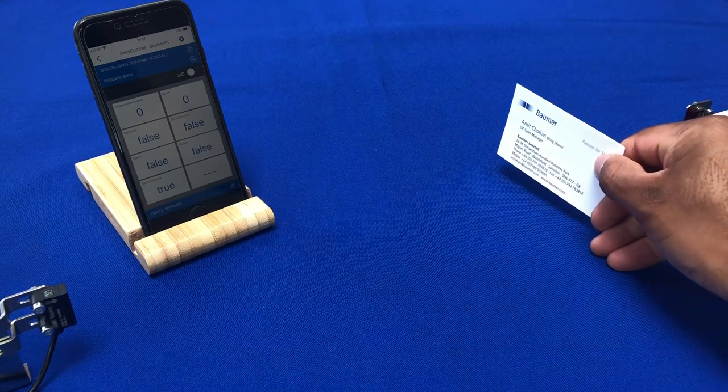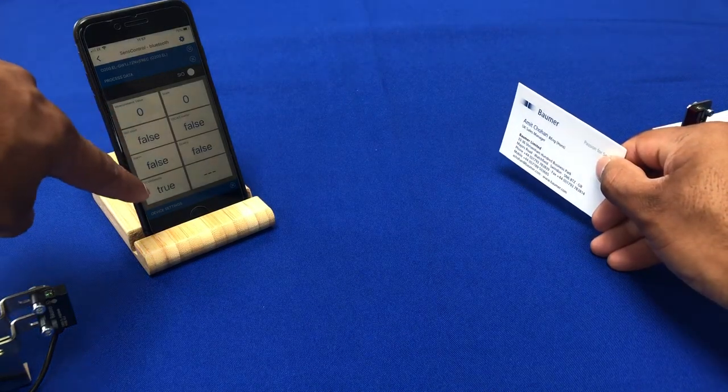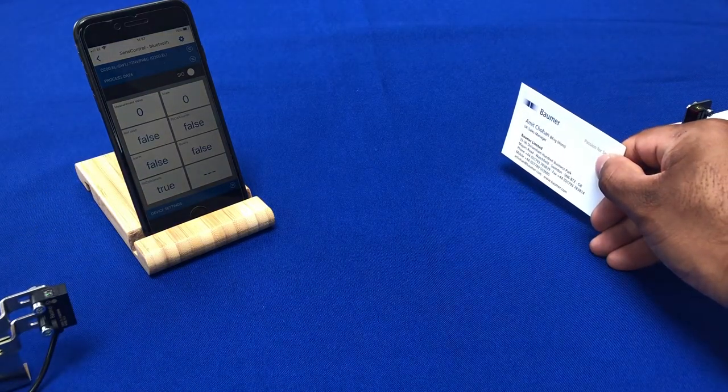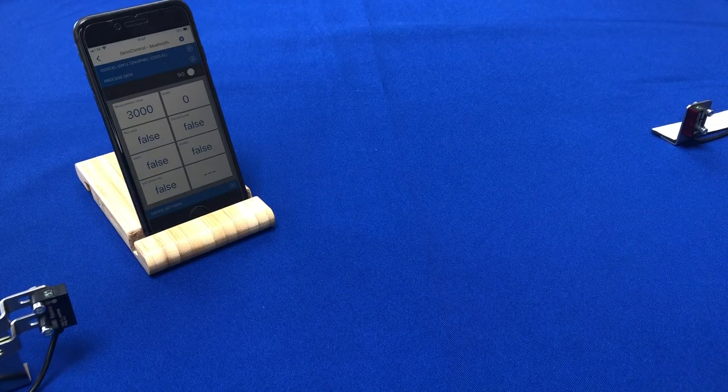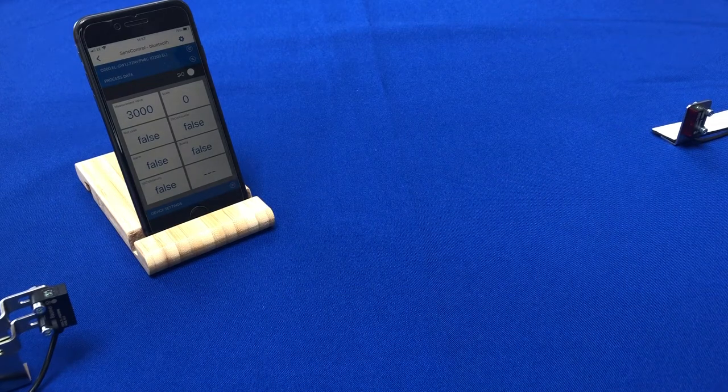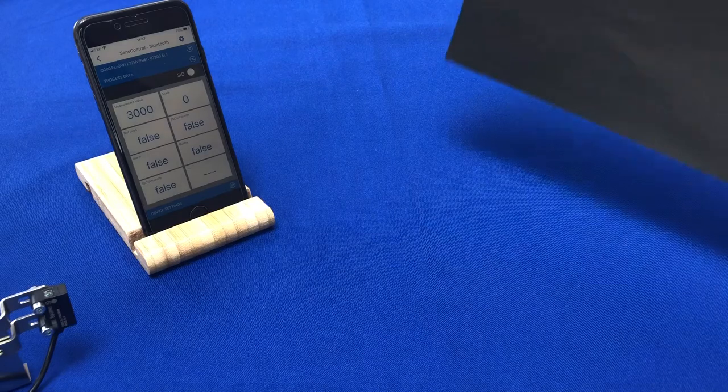The light value turns to zero because I'm fully blocking the beam, and also the output turns to true. The opposite scenario.